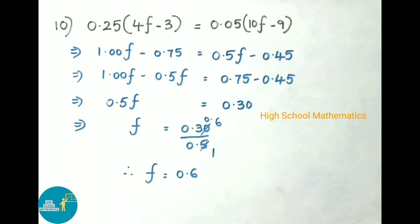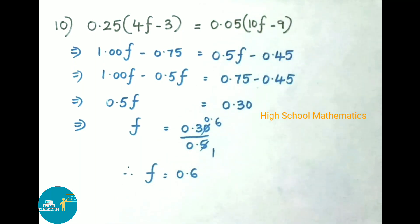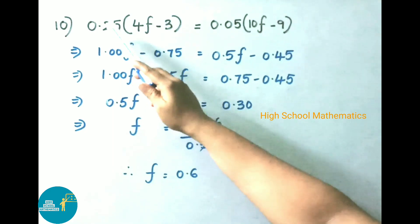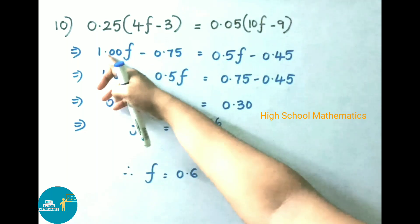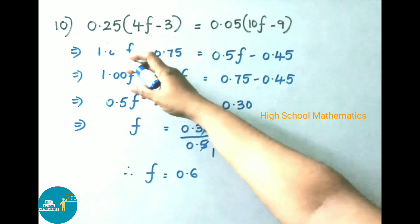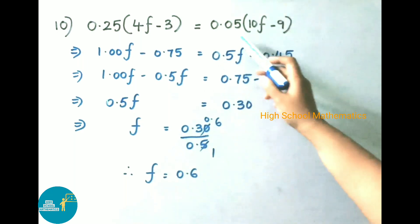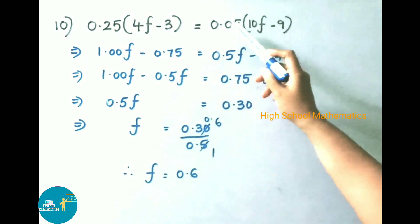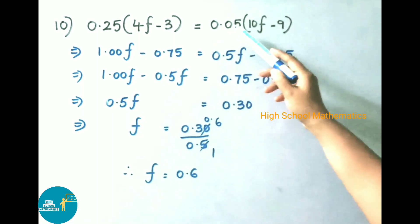See now question number 10: 0.25 into (4f minus 3) equals 0.05 into (10f minus 9). That implies 0.25 into 4f is 1.00f — since there are 2 decimal digits, we write 1.00f. Minus 0.25 into 3: multiply 25 into 3 is 75, so that is 0.75. Equals 0.05 into 10f — the decimal shifts one place right — so 0.5f minus 0.05 into 9.